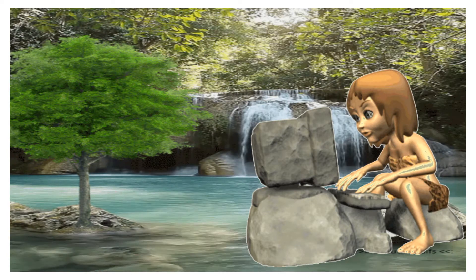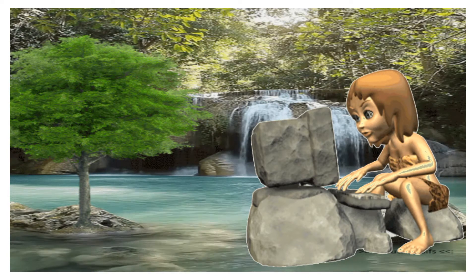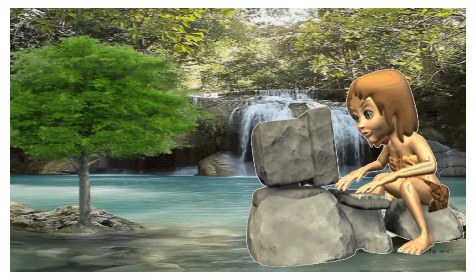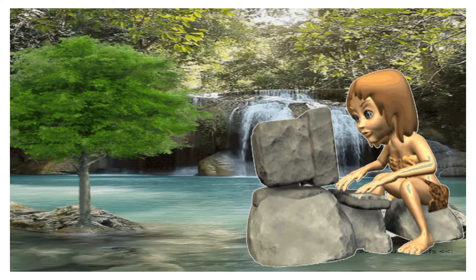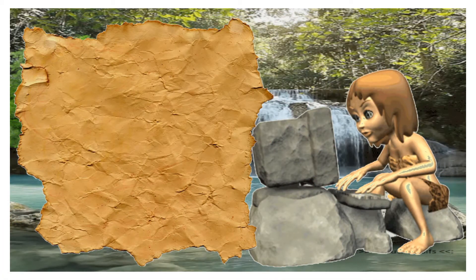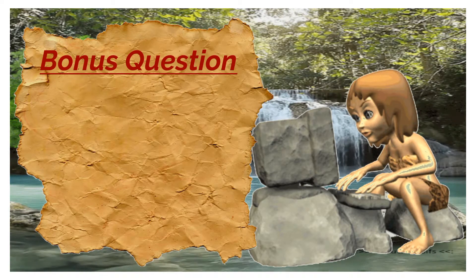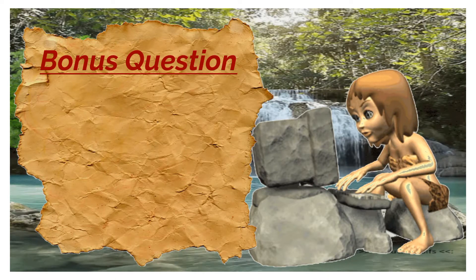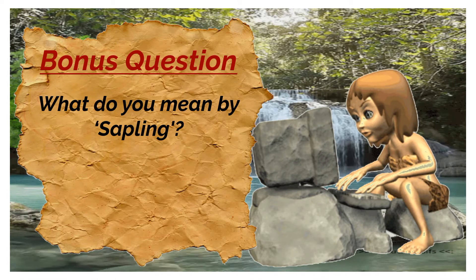Who is this boy? This is an early-age boy typing something on his stone computer. We should know what he is typing. It's time for our bonus question. Our today's bonus question, typed by this early-age boy, is: what do you mean by sapling?